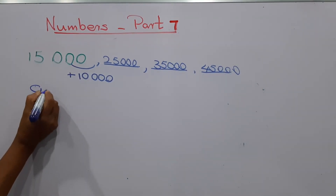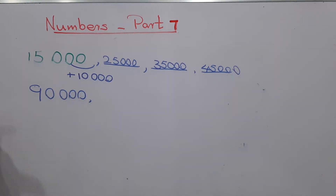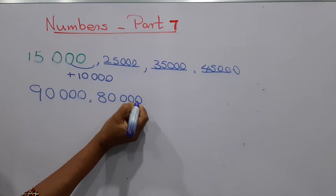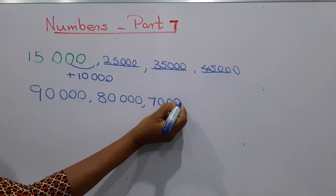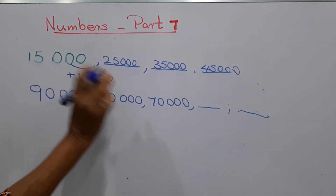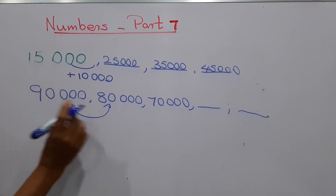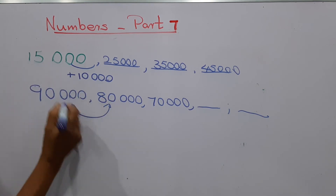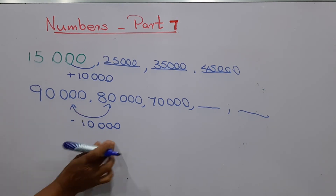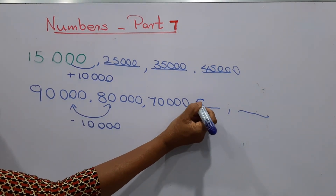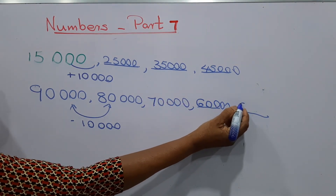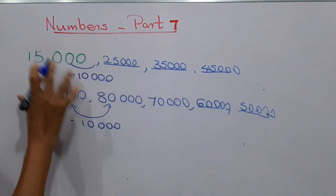We'll see another pattern. The starting number is 90,000; the second number is 80,000; the third number is 70,000. You have to complete the pattern. The main point is to understand the common difference. Here it is subtracted by 10,000. So next: 60,000, then 50,000. That is the common difference.